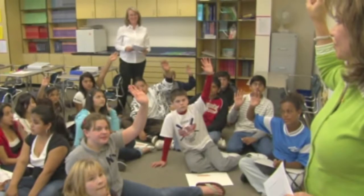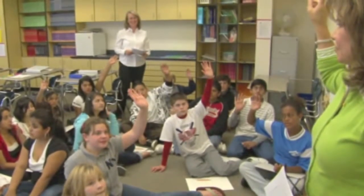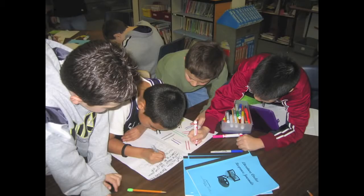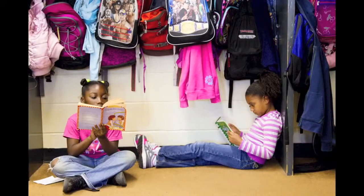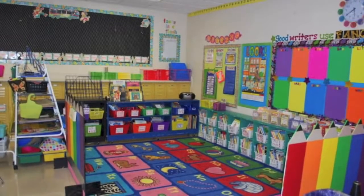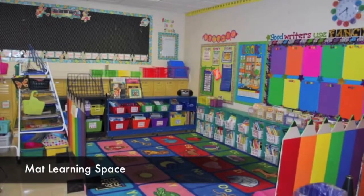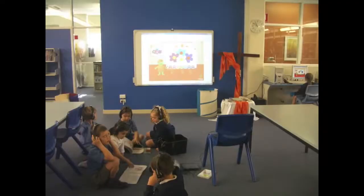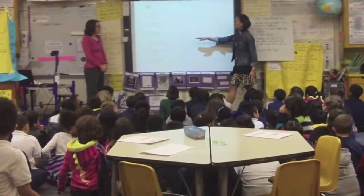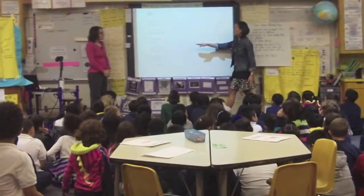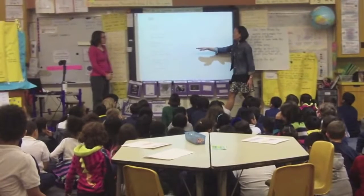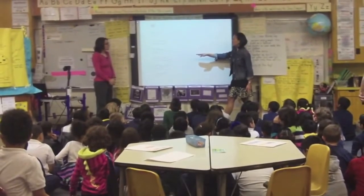Setting up your classroom is not just putting desks and chairs out. It is creating a learning environment. And as we all know, learning happens in lots of different ways. After all these years of teaching, the first thing I do when I begin to set up my classroom is to make a mat space. I must admit that I very rarely teach students sitting at their desk. When I am teaching a new concept or reviewing work, I like to have eye contact with each student. This engages them in the learning process. So, the mat is a perfect place for this to happen.